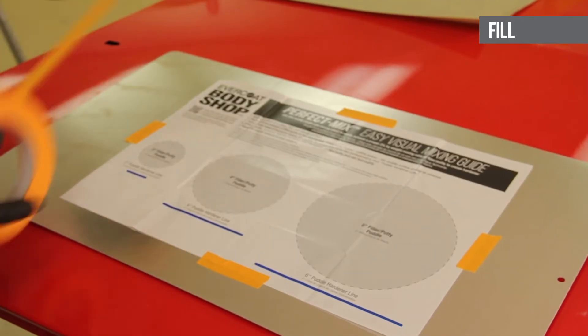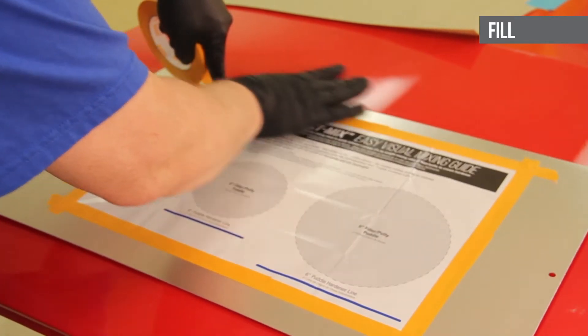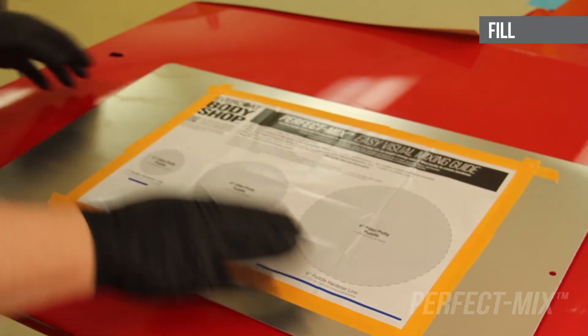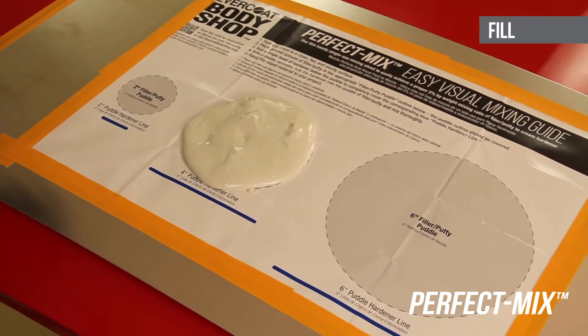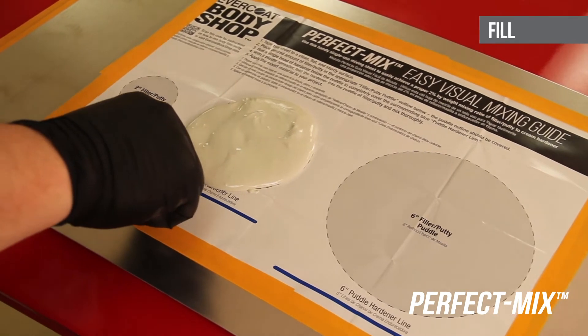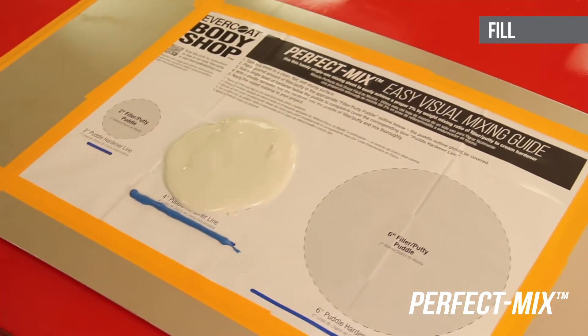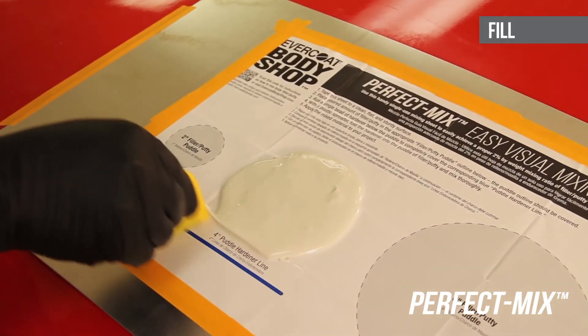Using the enclosed Perfect Mix mixing guide or mixing based on the size of the puddle of body filler. The first option is using the Perfect Mix mixing guide. Tape the mixing guide to a sturdy, clean surface. Completely fill one of the circles with the filler that represents the amount needed. Dispense a line of cream hardener the same length as the blue line below the circle.